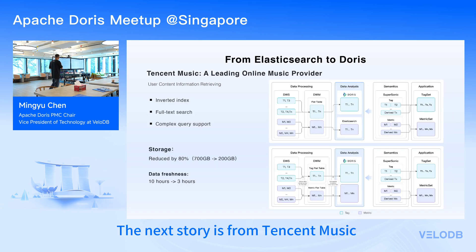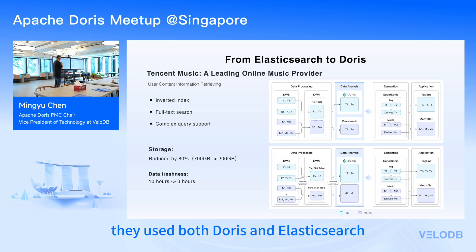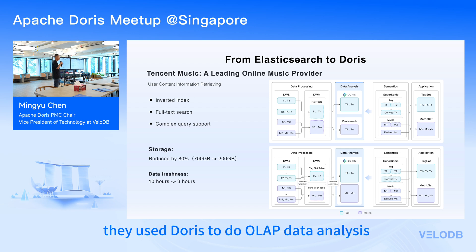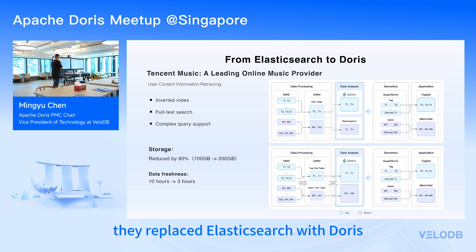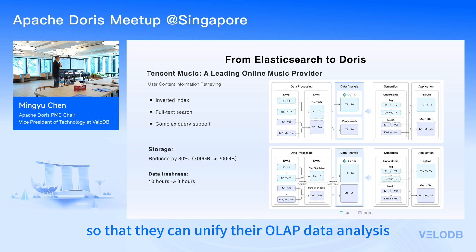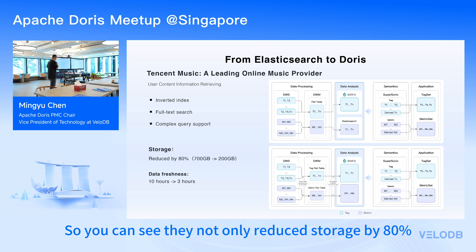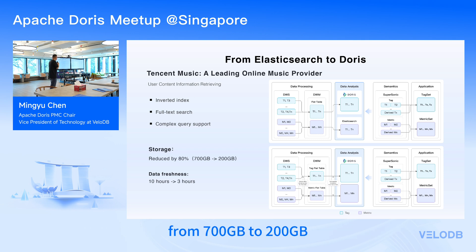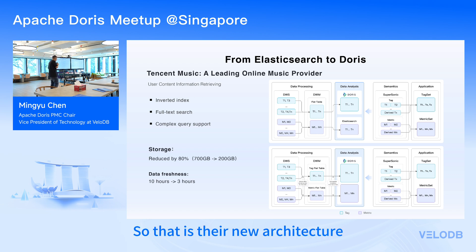The second story is from Tencent Music, a leading online music provider in China. In their previous architecture they used both Doris and Elasticsearch — Doris for OLAP data analysis, and Elasticsearch for user content information storage and retrieval. After Doris added full-text search support, they replaced Elasticsearch with Doris, unifying OLAP data analysis and user content retrieval in one system. They reduced storage by 80%, from 700 GB to 200 GB, and improved data freshness by reducing the data import time from 10 hours to 3 hours.